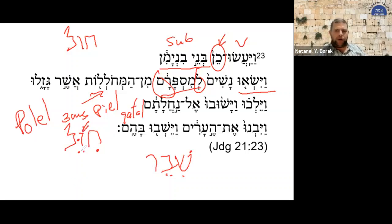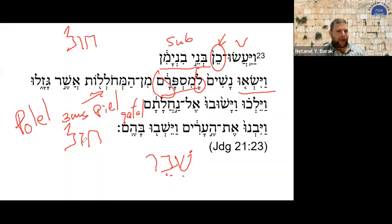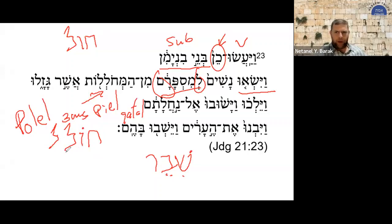So instead of duplicating the vav, we are duplicating the lamed. We get 'cho' — the vav is retained as a reading mother — 'cho-leel.' That would be 'he danced.' Choleel would be the polel form, which is an alternative to the pi'el.